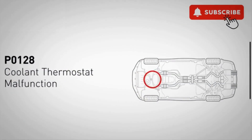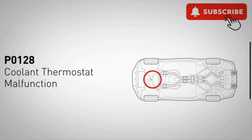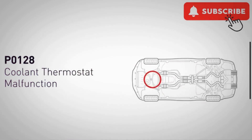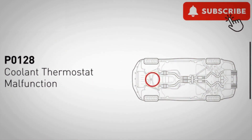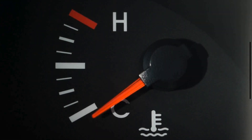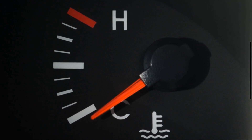The P0128 code is a diagnostic trouble code that indicates the engine coolant temperature is below the thermostat regulating temperature. Specifically, it means that the engine control module has detected that the engine is not reaching its proper operating temperature within a specified amount of time after startup.